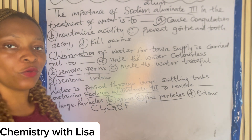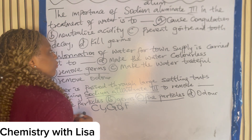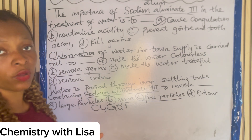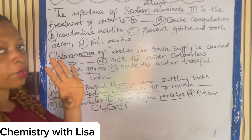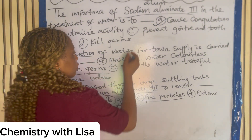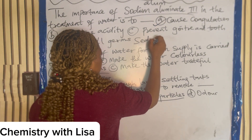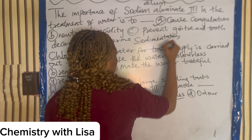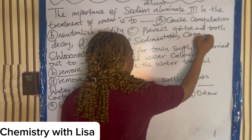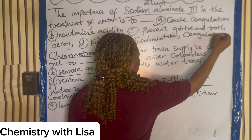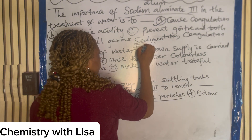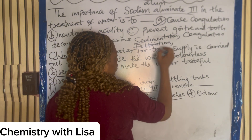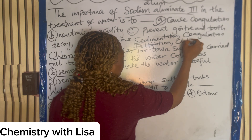The second thing we need to know is the processes of water treatment. There are four major processes: sedimentation, coagulation, filtration, and chlorination. These are the four processes in treatment of water for town supply.